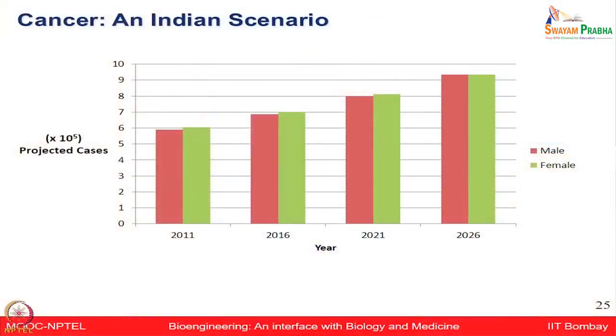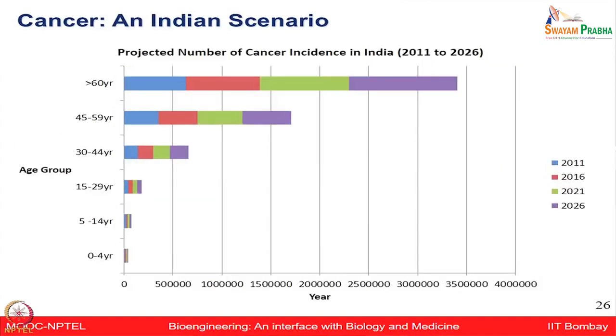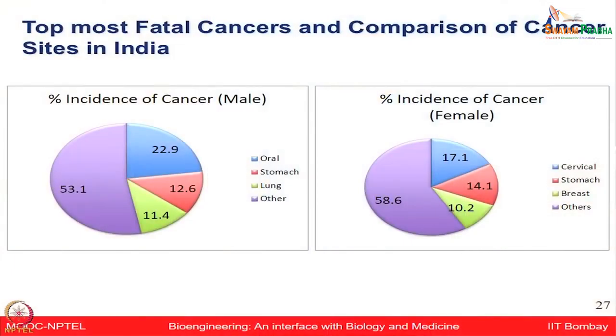Cancer is the most challenging problem in front of us and a global problem affecting the whole population. Looking at the graph from 2011 to 2026, projected cancer cases in India are going to keep rising in both male and female populations equally. Even in very young age groups such as 15 to 29, and 30 to 44 years, as well as older groups of 45 to 59 and over 60 years, cancer is on the rise across all age groups.